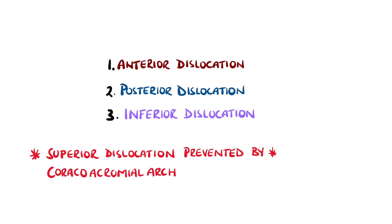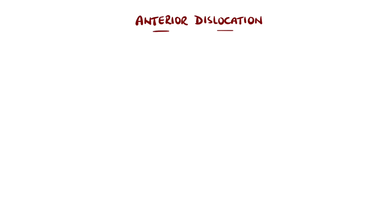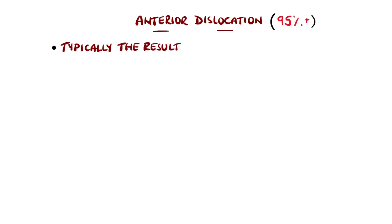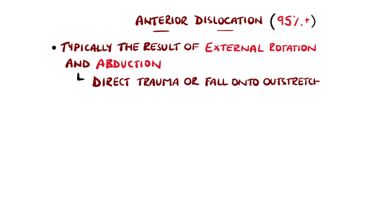Anterior is by far the most common, because this is where the joint capsule is weakest. It happens as a result of abduction, extension, and external rotation of the humerus, often due to direct trauma or a fall onto an outstretched arm.